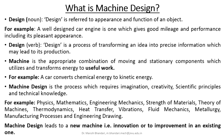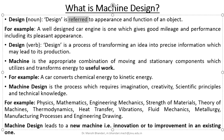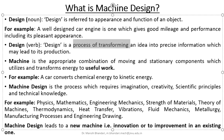What is machine design? We need to understand the terms machine and design separately. If we take design as a noun, design refers to the appearance and function of an object. For example, a well-designed car engine is one which gives good mileage and performance while also having a pleasant appearance. If we take design as a verb, design is a process of transforming an idea into precise information which may lead to its production.